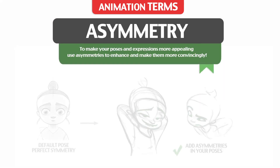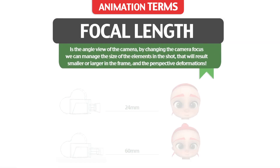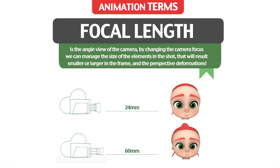Asymmetry: to make your poses and expressions more appealing, use asymmetry to enhance and make them more convincing. Focal Length: the angle view of the camera. By changing the camera focus we can manage the size of the elements in the shot, which will result smaller or larger in the frame, and control the perspective deformations.